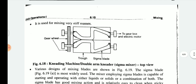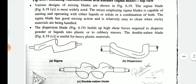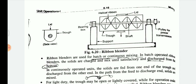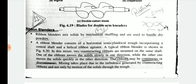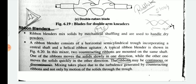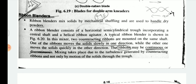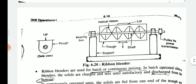Today's topic is about ribbon blenders. As we can see in the picture, a ribbon blender mixes solids by mechanical shuffling and is used to handle dry powders. The ribbon blender consists of a horizontal semi-cylindrical trough incorporating a central shaft and a helical ribbon agitator.